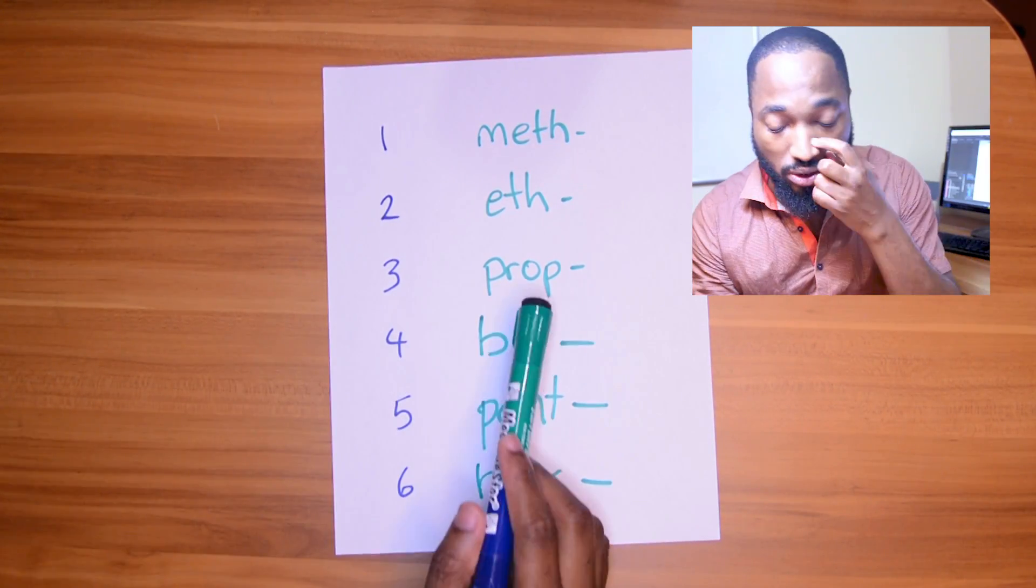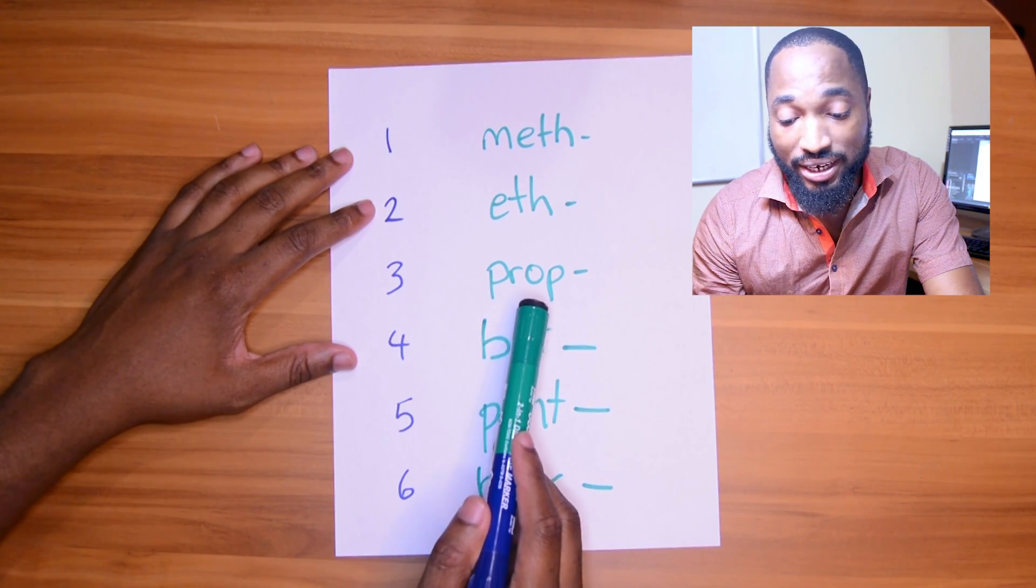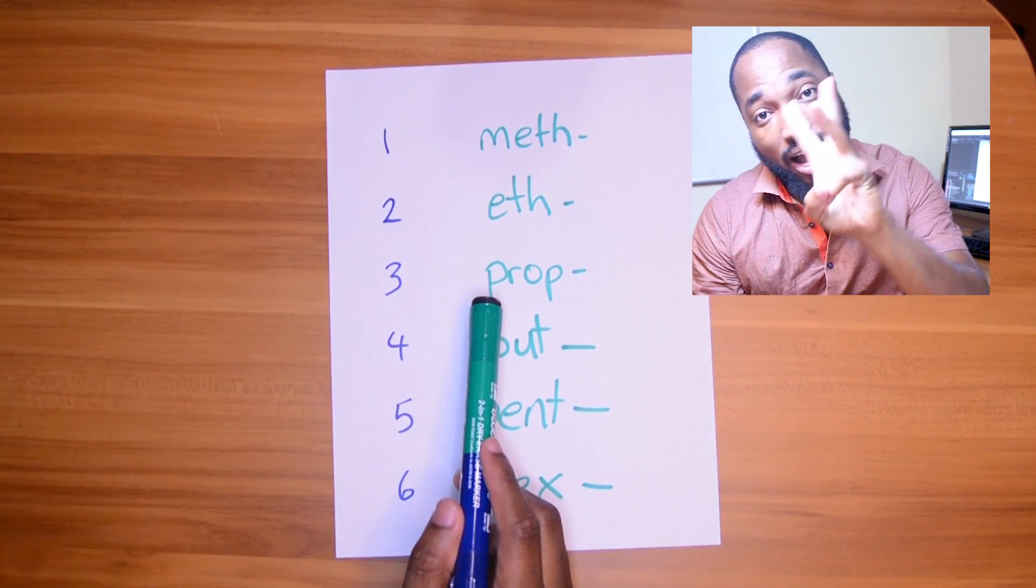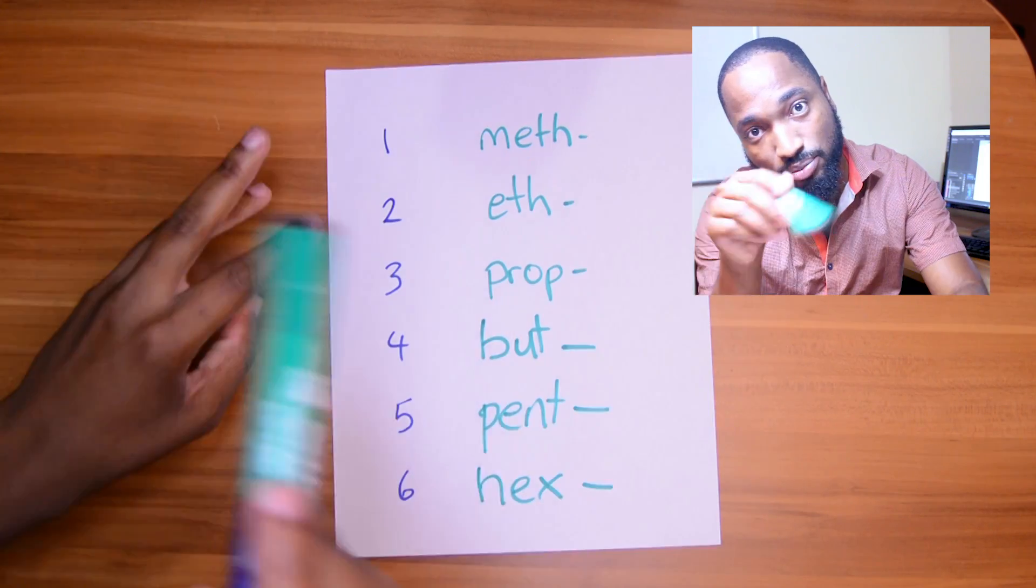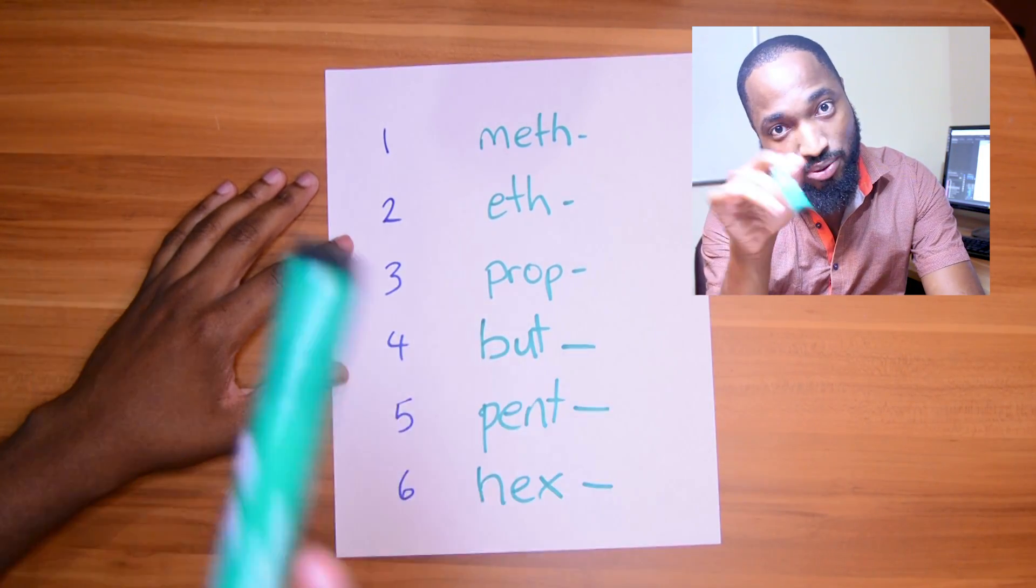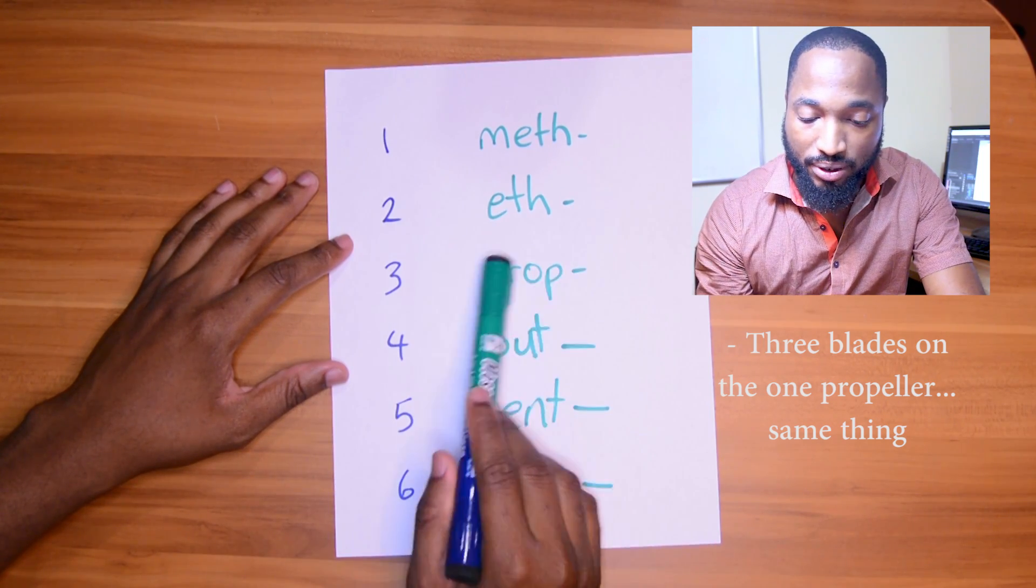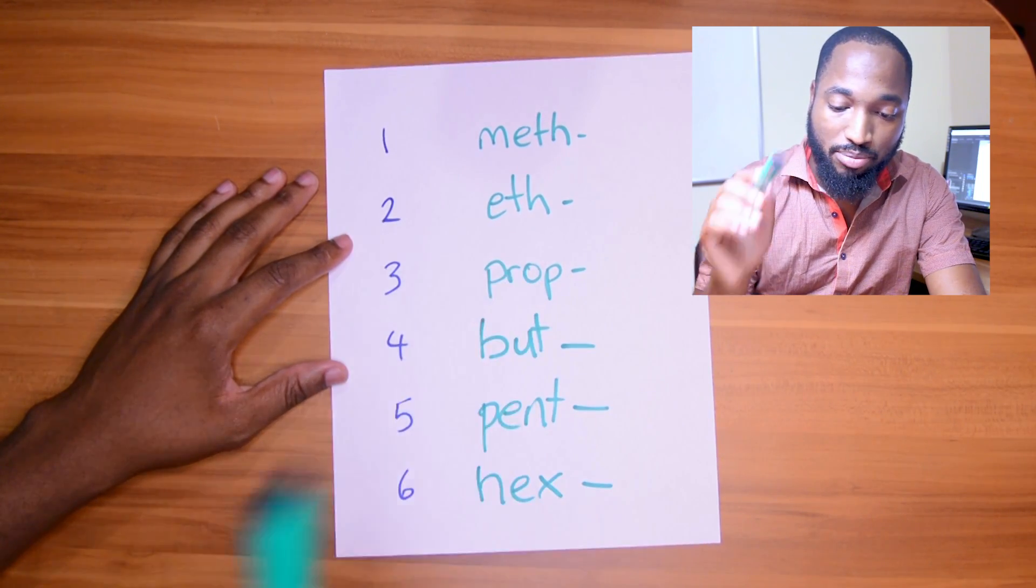All right, so prop. This is how I stopped mixing it up. I saw a plane in Piarco. The propeller had three propellers: zoom, zoom, zoom. Seeing those three propellers, one, two, three, spinning one, two, three. Bam, prop. So don't forget that again. Prop is the one with three propellers.